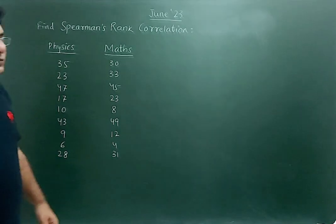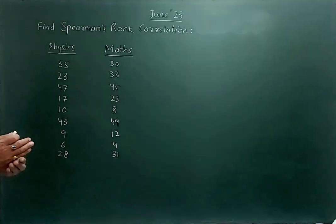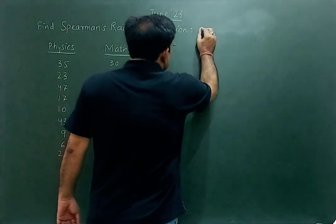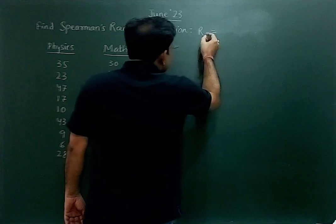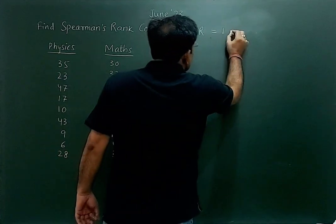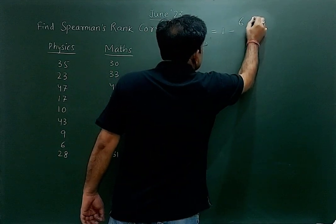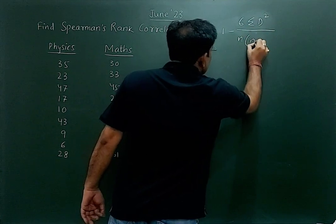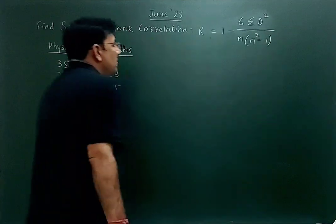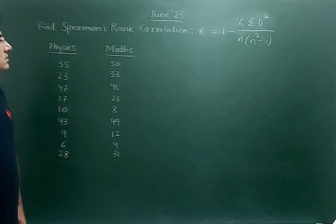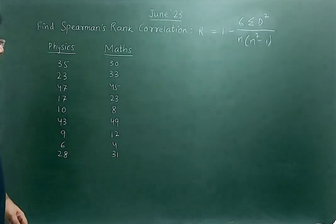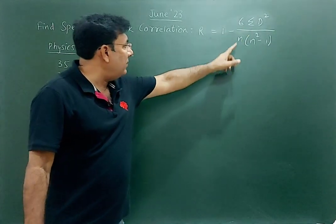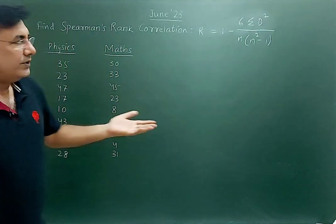This question came in June 2023 where physics and math marks are given for nine students. Let's find the Spearman's rank correlation. First, write down the formula: r = 1 minus 6·Σd² divided by n(n²−1). This is the formula we generally use, where d is the difference in ranks and n is the number of students — here n equals 9.